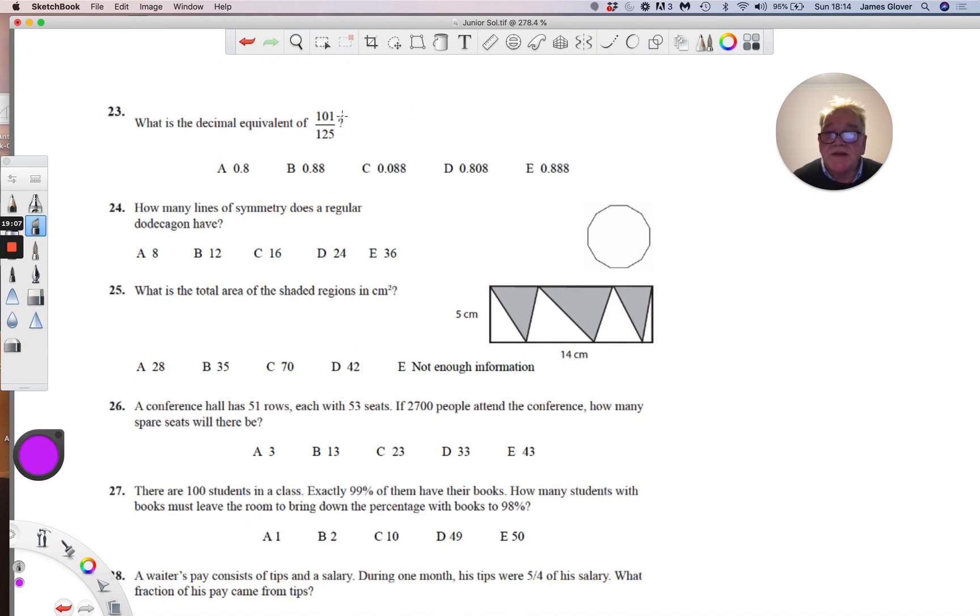Multiplying the top and the bottom proportionately by two gives 202 over 250. Multiply top and bottom by four, we get 808 over 1000. And so the answer is D, 0.808.